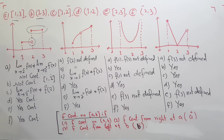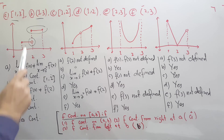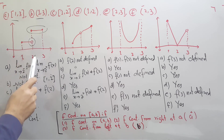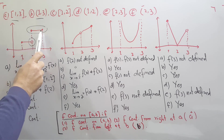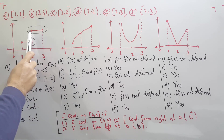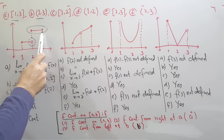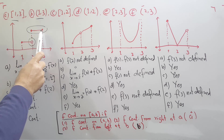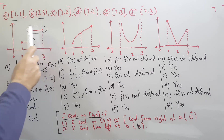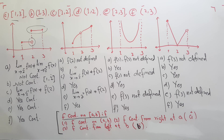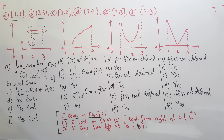For the closed interval [2, 3], both 2 and 3 are included. We can see that the function is continuous from 2 to 3. In the open interval (2, 3), even though 2 and 3 are not included, the function is continuous.